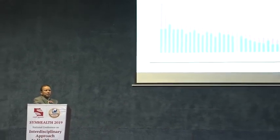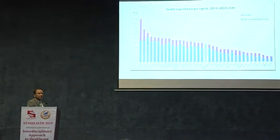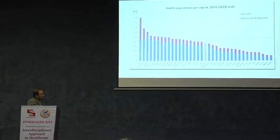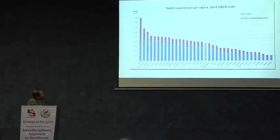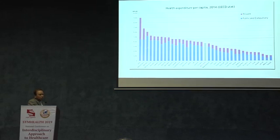This chart shows health expenditure per capita from OECD countries — an organization of around 35 developed countries, mostly European, North American, and some South American. India is not one of them. In the United States, health expenditure is $9,000 per head per year. The blue portion is public and the pink is private. The US is really an outlier here, spending much more than other nations.